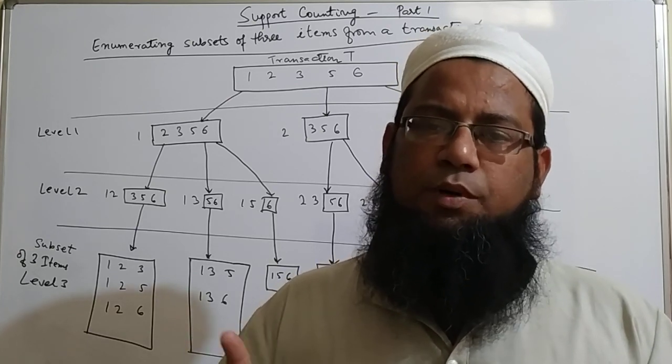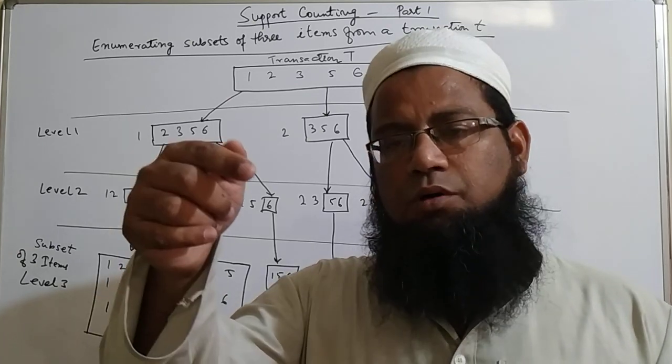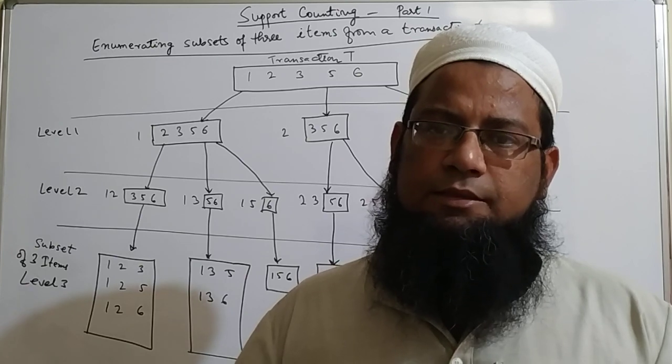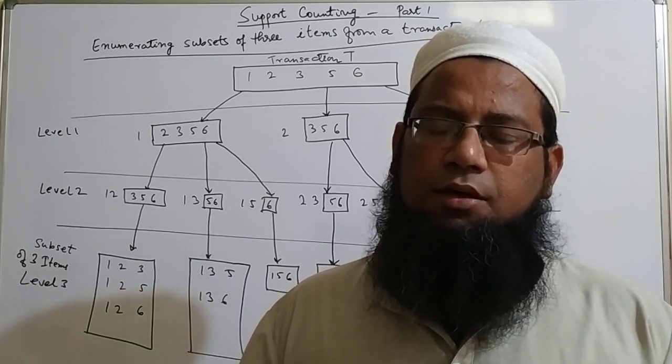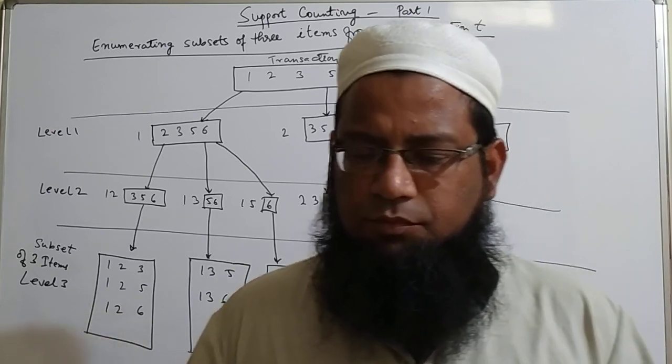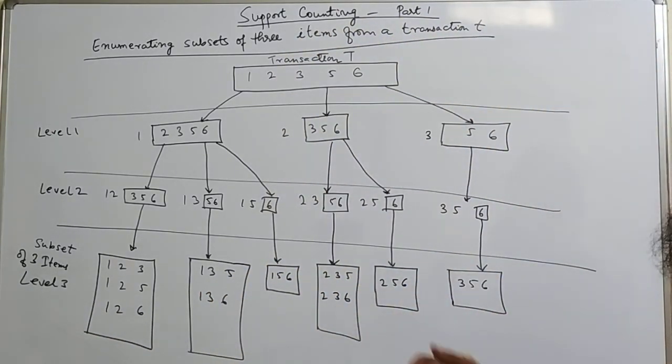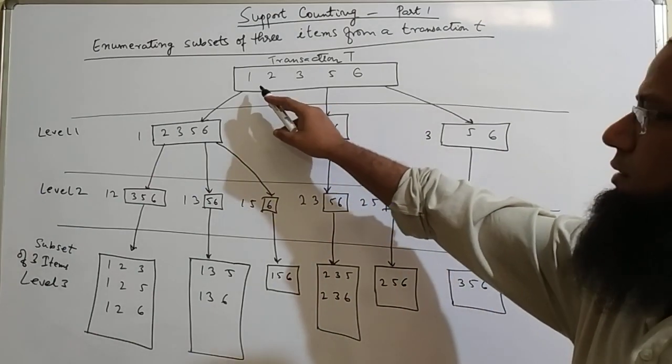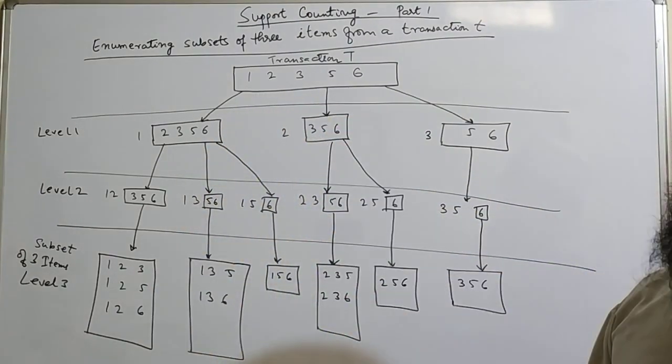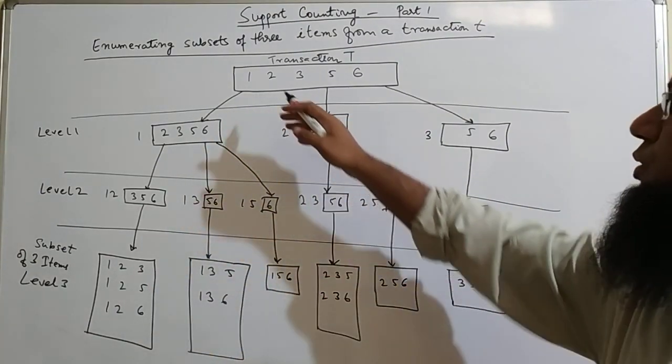So this method has got two parts. First, to find out all the candidate itemsets and the second part is that using a hash table counting the support. Let's see the first part. So suppose we have